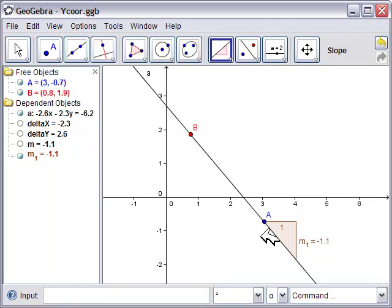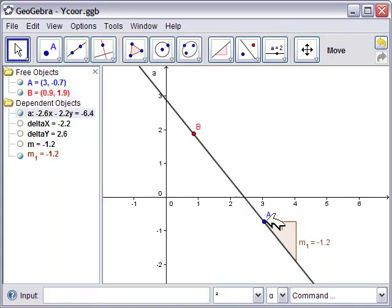And of course, A and B are free points. So if we put our move tool here, we can change these values to anything that we want.